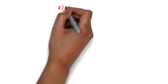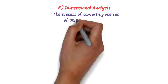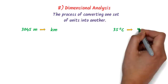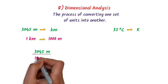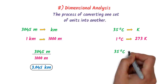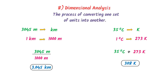The next important topic is dimensional analysis. The process of converting one set of units to another is called dimensional analysis. For example, convert 3045 meters to kilometers: since 1 km = 1000 m, divide 3045 by 1000 to get 3.045 km. To convert 35°C to kelvin: 35 + 273 = 308 K.